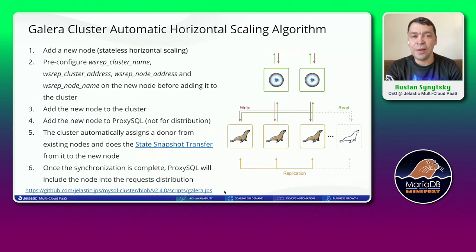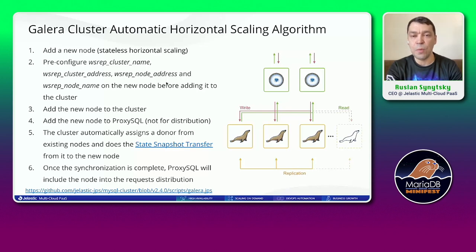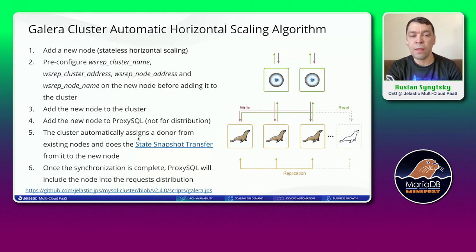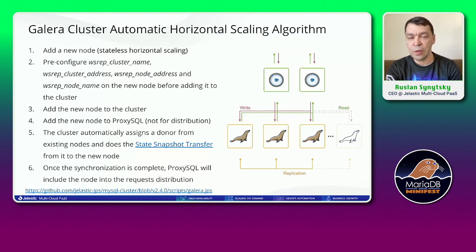For Galera cluster automatic horizontal scaling: when a customer presses the plus button, we create a new node in stateless mode — a new empty container with empty MariaDB. We pre-configure some parameters and add this node to the cluster, also adding it to ProxySQL but without distribution. As soon as all data is synchronized through the state snapshot transfer and synchronization is complete, ProxySQL will include this node in the distribution list so it can handle new requests.